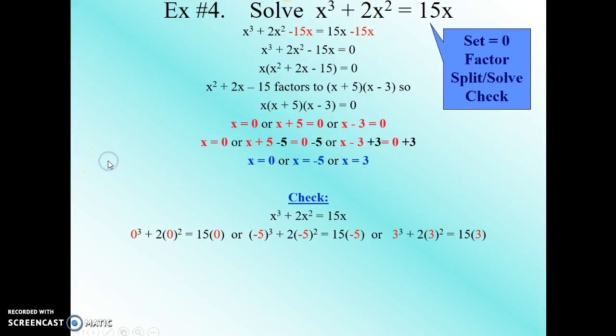So here's our equation. We're going to plug in our three possible solutions, make sure they all work. And so when we work them out, we find out that they are, in fact, equal. The equation checks. Therefore, our solution set is 0, negative 5, and 3.